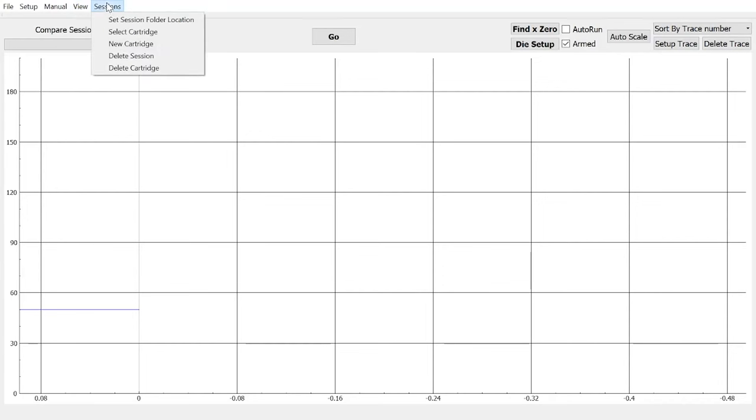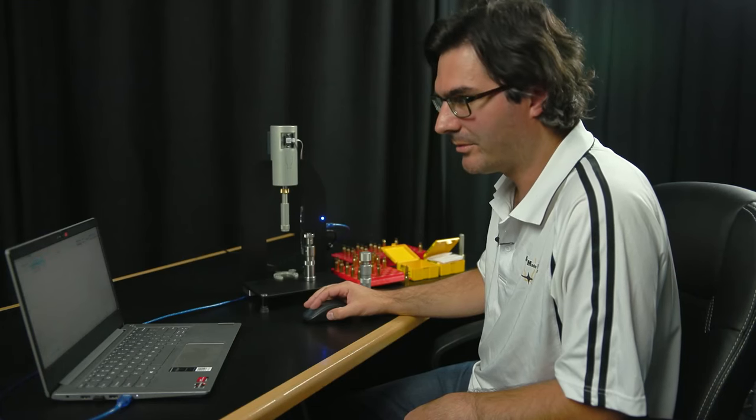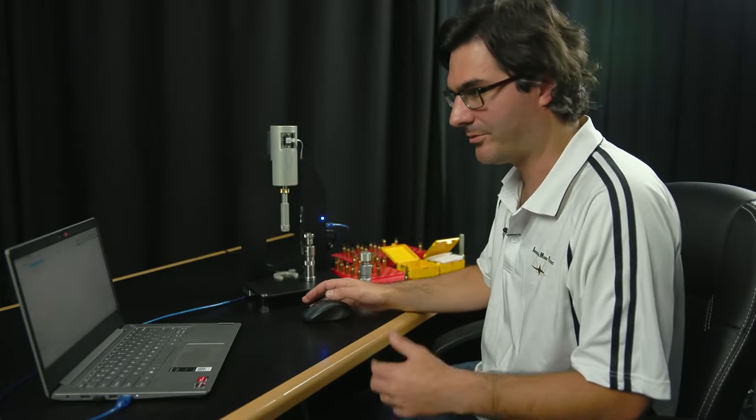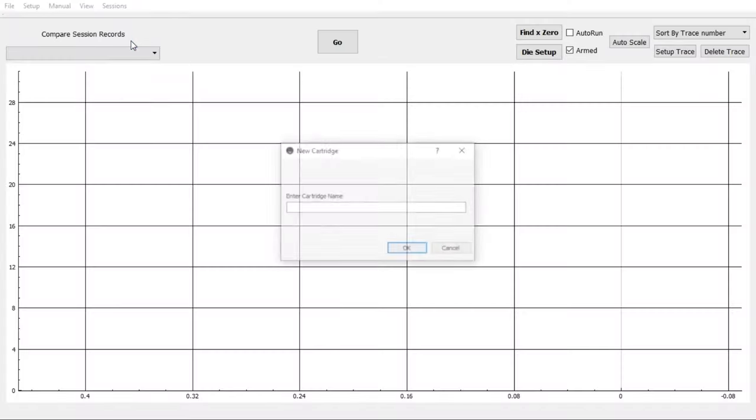At the top here, you've got Sessions. Click on that, and now you can start creating data. This is 308. We want to create a folder called 308. Click on New Cartridge. I want to call this 308.